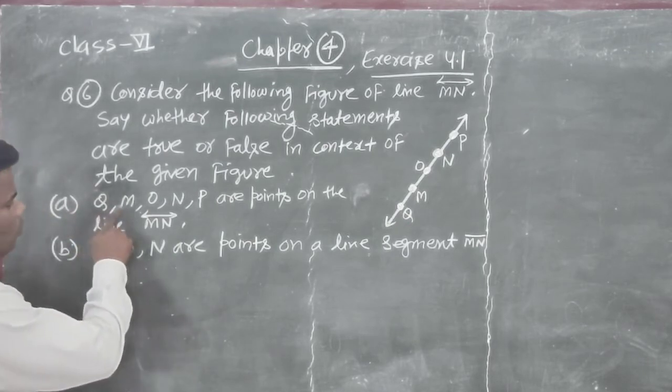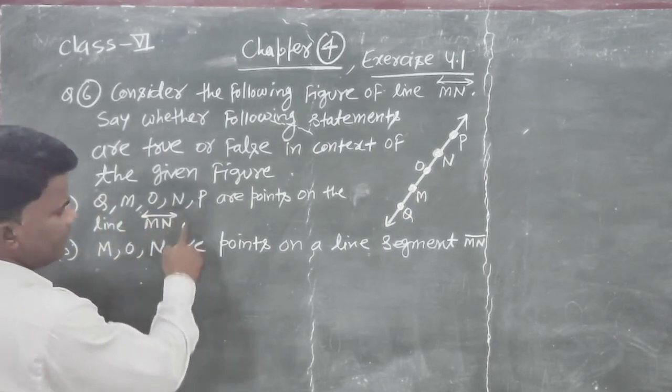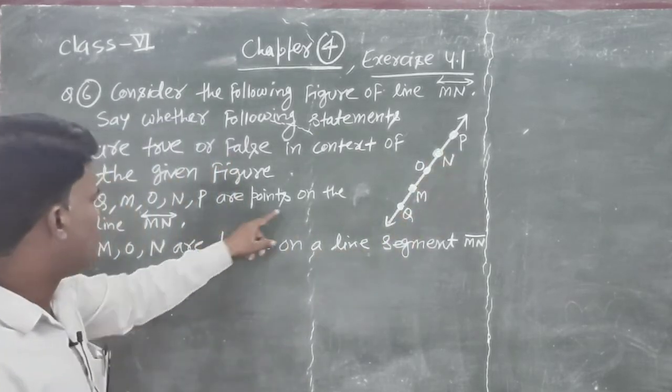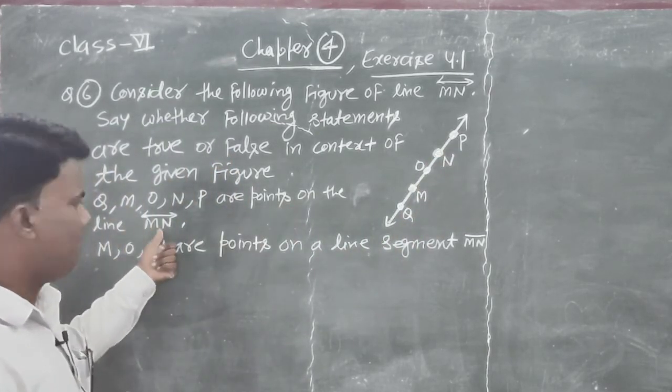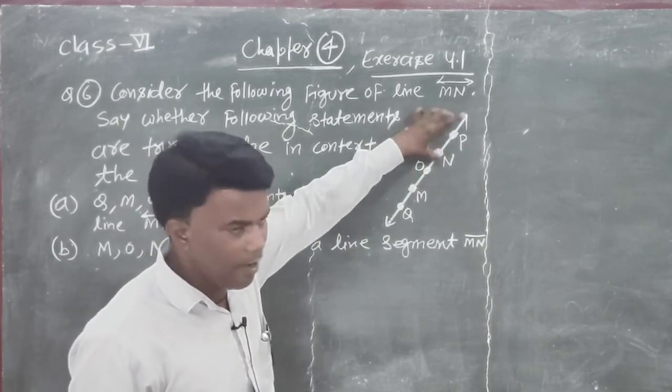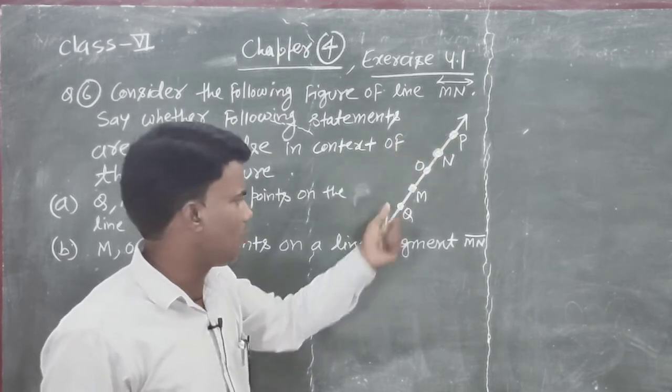A point Q, M, O, and P. Q, M, O, and P are points on the line MN. Kya MN line par Q, M, O, and P points hai, ya nai hai, yaa apko bata hai.